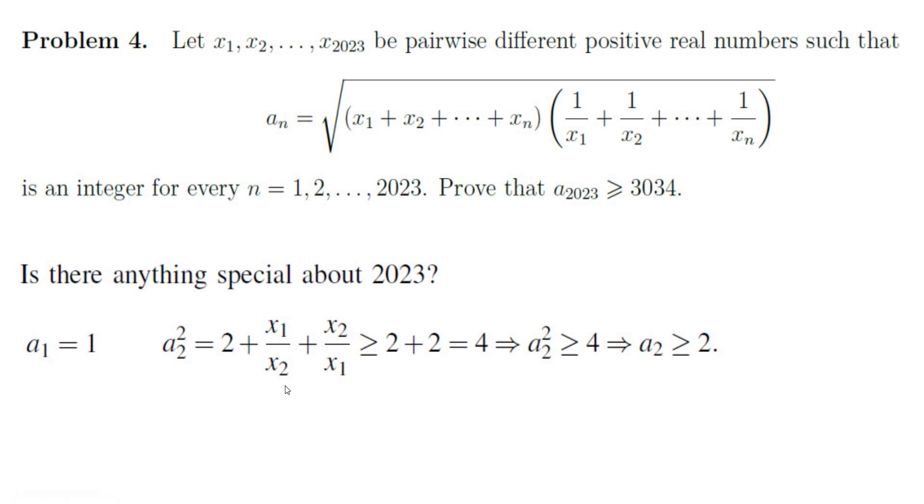And if you apply the AM-GM inequality to these two terms you would get 2 plus 2 because the square root of x1 over x2 times x2 over x1 is 1. And if you add them you get 4. So that means an is at least 2. But we know that x1 and x2 are not the same so that means x1 over x2 and x2 over x1 are not the same which means a2 is at least 3 because the equality does not hold.